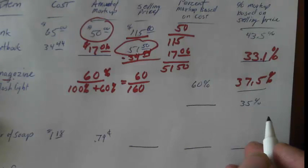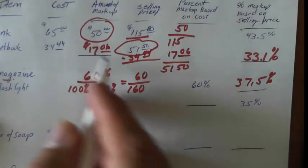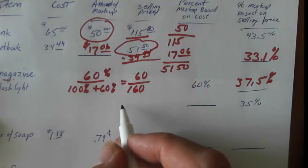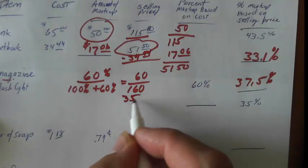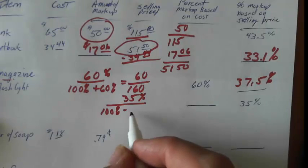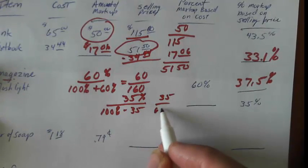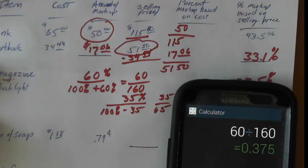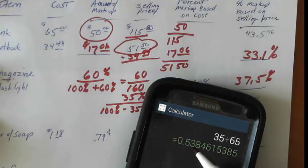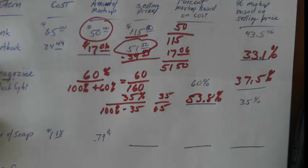Example 11 gives a percentage markup based on selling price and asks for the percentage markup based on cost. You can do it just by plugging into the formula. This formula uses the percentage markup based on selling price — in this case 35 — over 100% minus the markup based on selling price. So here we subtract instead of add. We have 35 over 65, and 35 divided by 65 equals .5384, so moving the decimal over 2 gives us 53.8%.